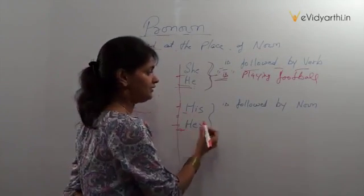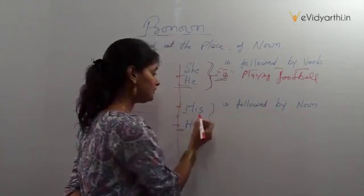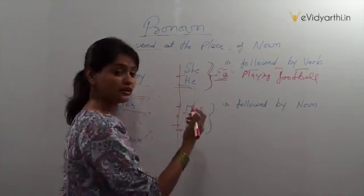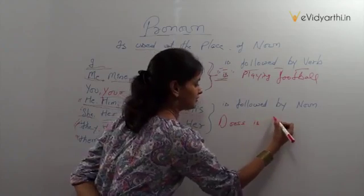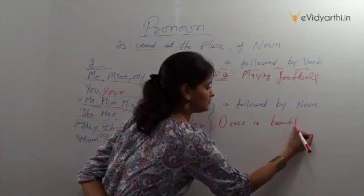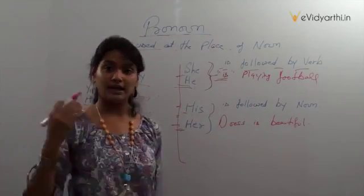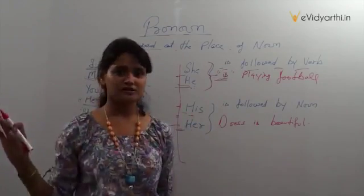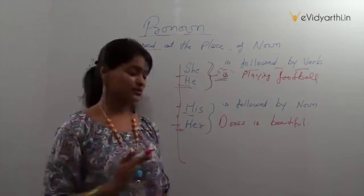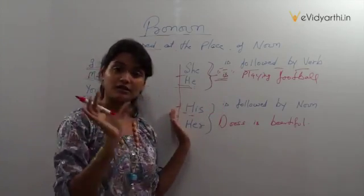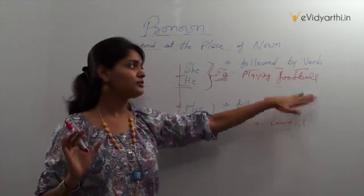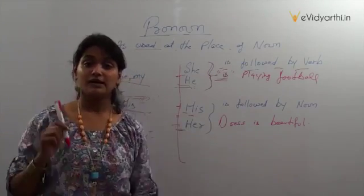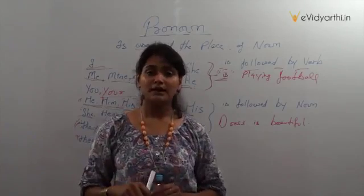Similarly, 'his' and 'her' are always followed by a noun. When we use 'his' or 'her' in a sentence, a noun always follows. For example, 'his dress is beautiful,' 'her handwriting is beautiful,' 'his speech was awesome,' 'her speech was awesome.' After these two pronouns, we always use a noun. These two important rules are very important to remember when you write or speak in English. Must practice and keep them in your mind always. Bye.